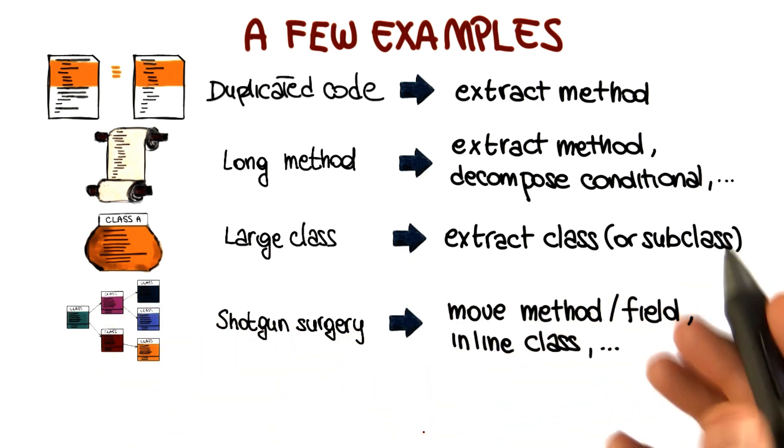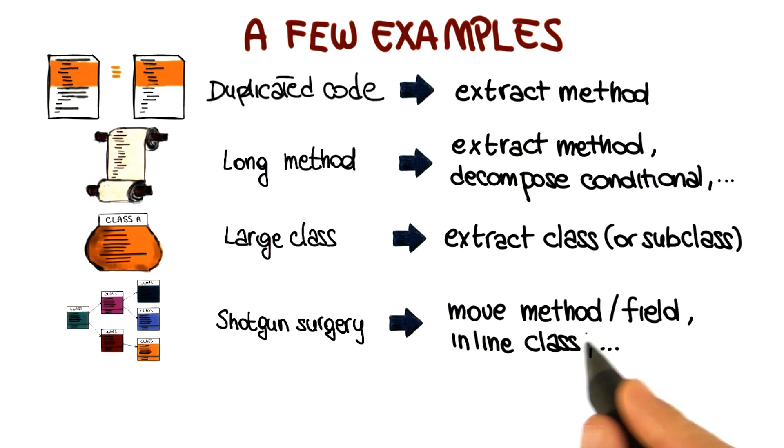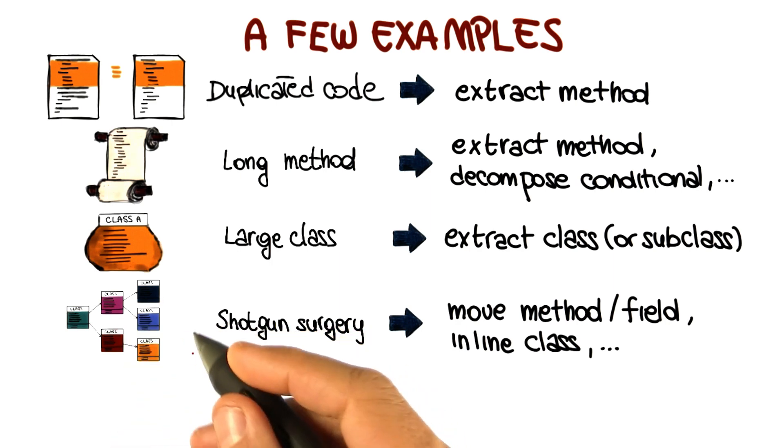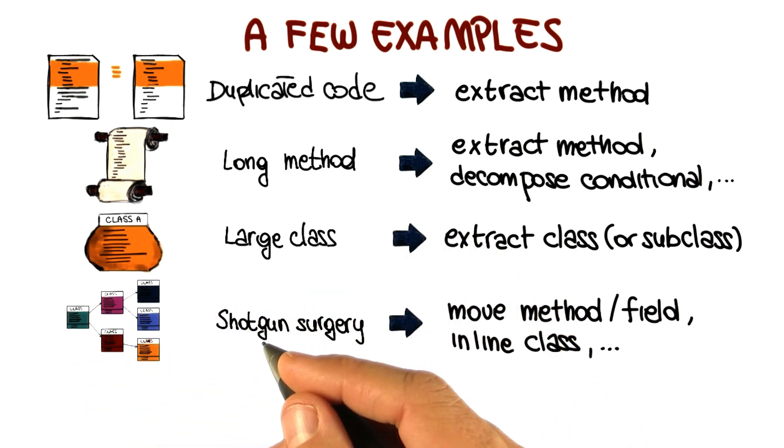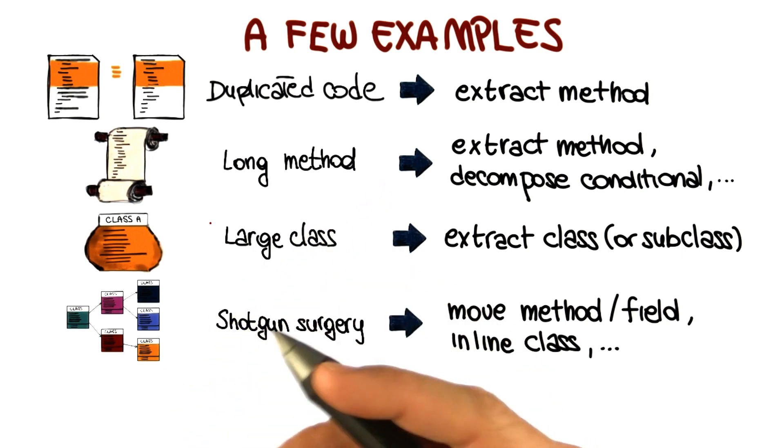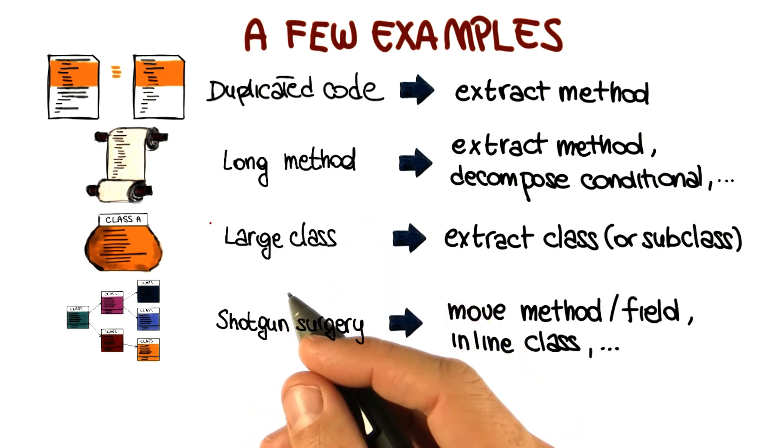Also in this case, you can use refactoring, for example by using the move method, or move field, or inline class, to basically bring the pieces of related functionality together. So that your resulting classes are more cohesive, you reduce the dependencies between the different classes, and you address this problem. Because at this point, each class is much more self-contained, and therefore it can be modified by itself without having to affect the rest of the system.